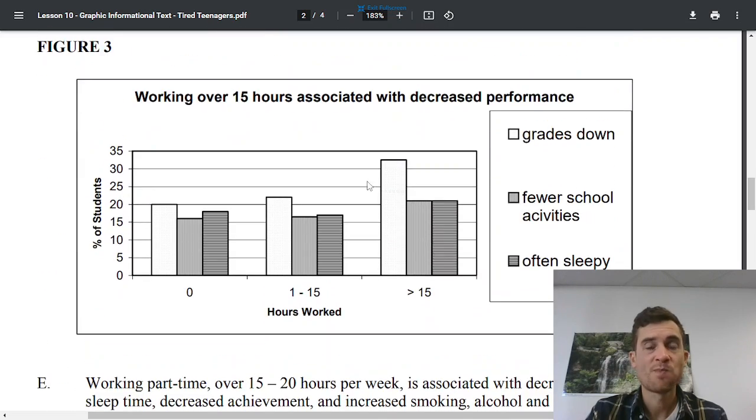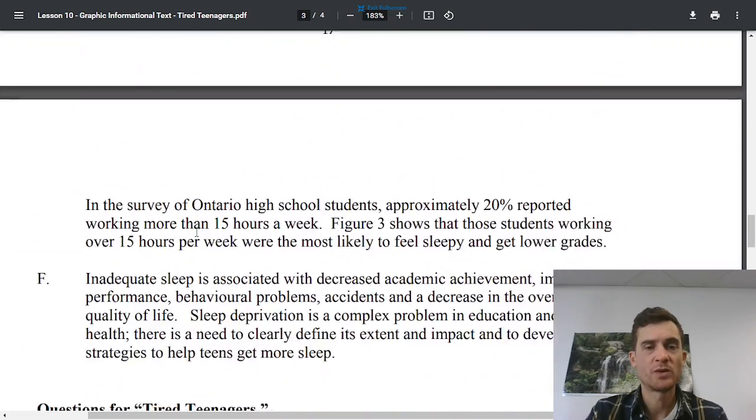Another figure, working over 15 hours associated with decreased performance. So we have the hours worked here. This means greater than 15, one to 15. And this means there's no job and there's percentage of students. The white is grades down. The slight dots, the few dots, or the fewer school activities, and the lines are often sleepy. So you can see what happens when people work more or work less.